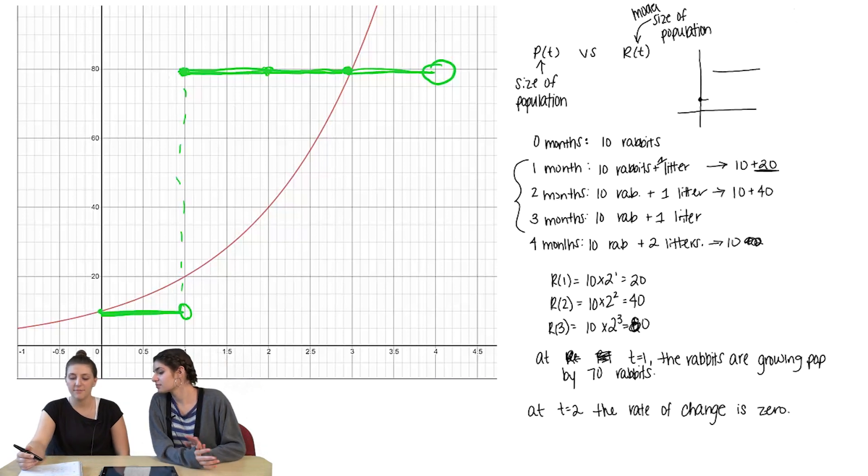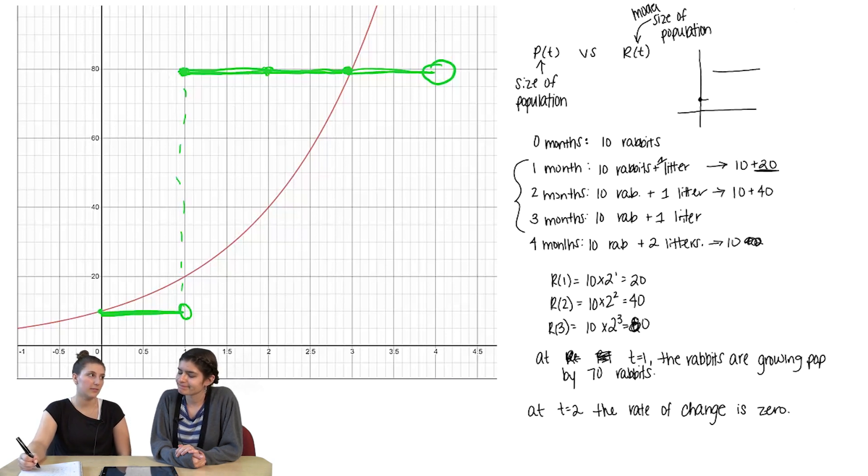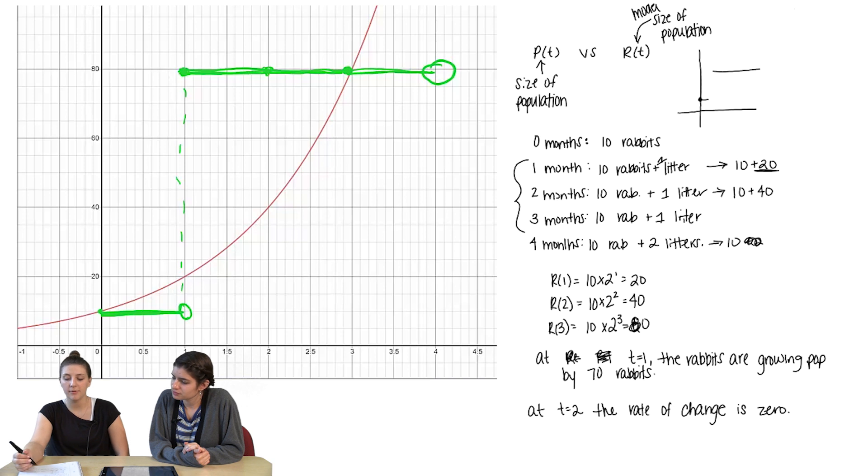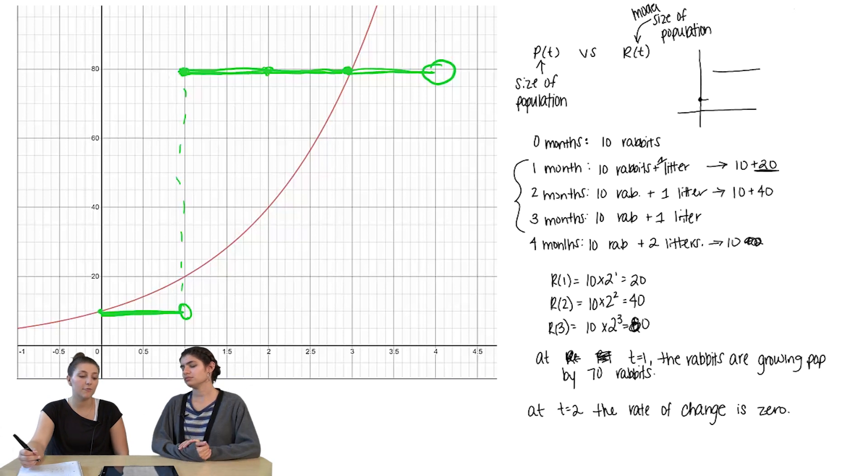I think there's a difference between the rate of change and the amount of change. So I think the amount of change at t=1 is 70 rabbits. But that's not really the rate of change. But I guess if we were going to find the instantaneous rate of change, we could take the average rate of change over a really small interval.